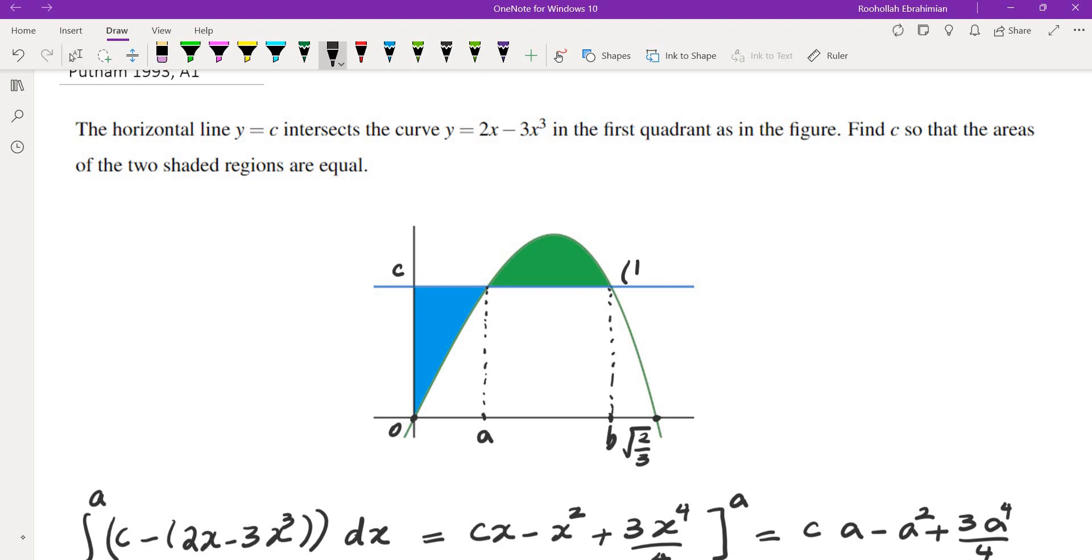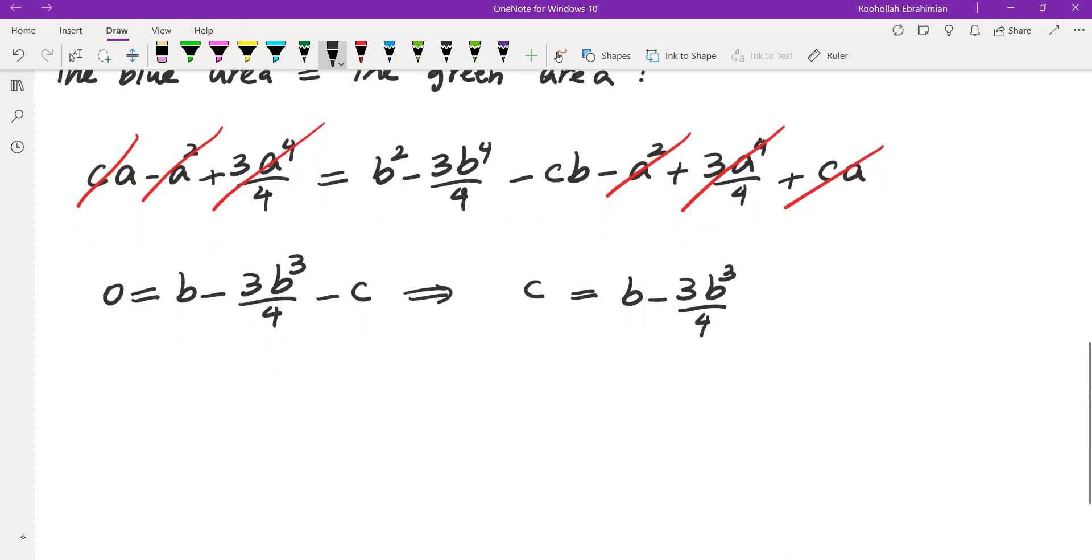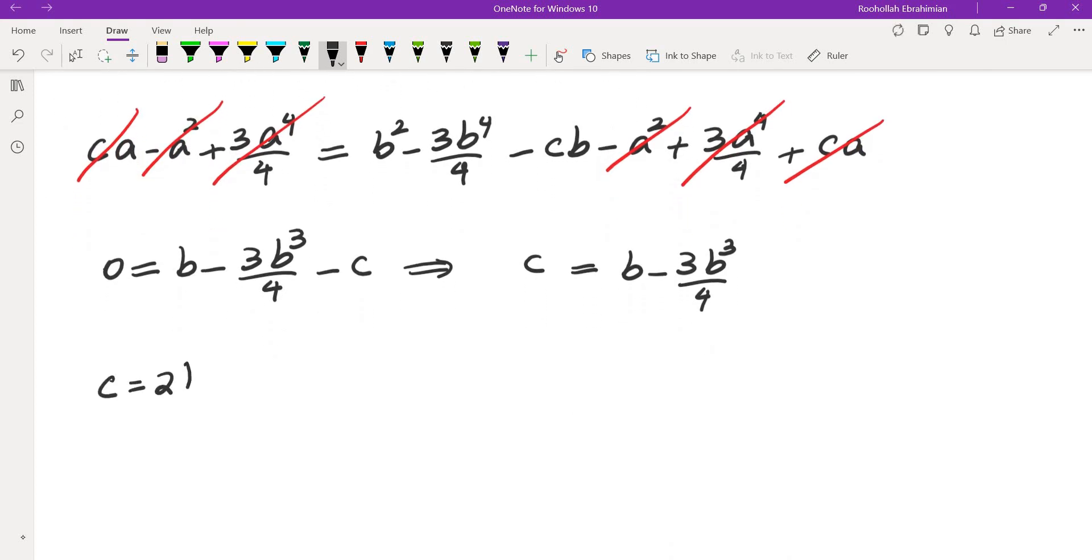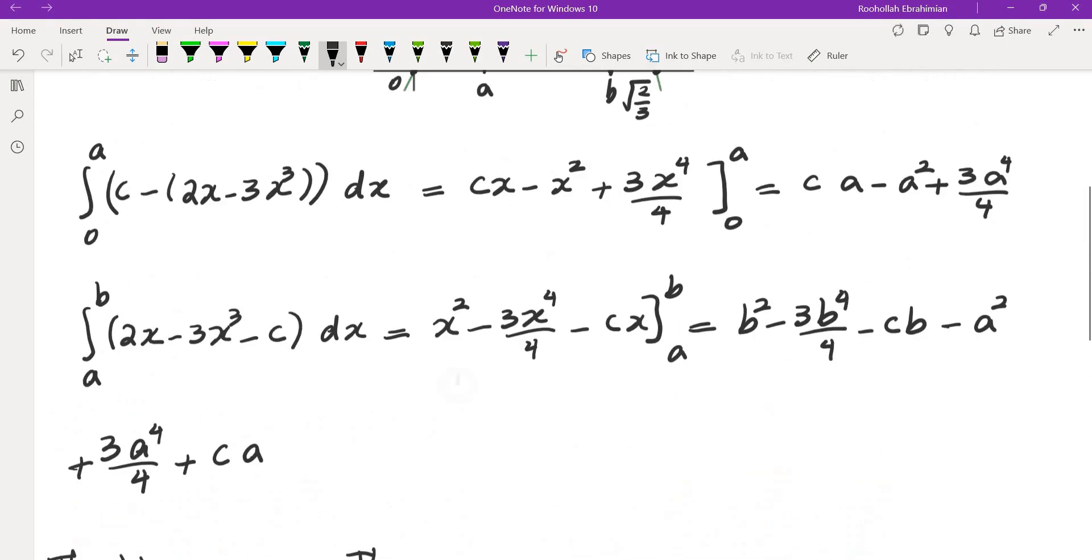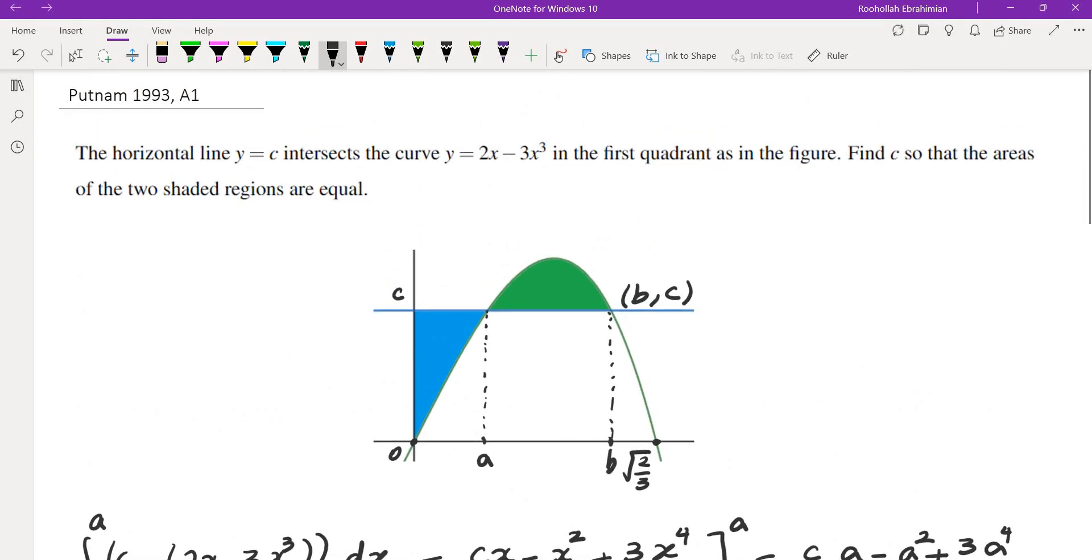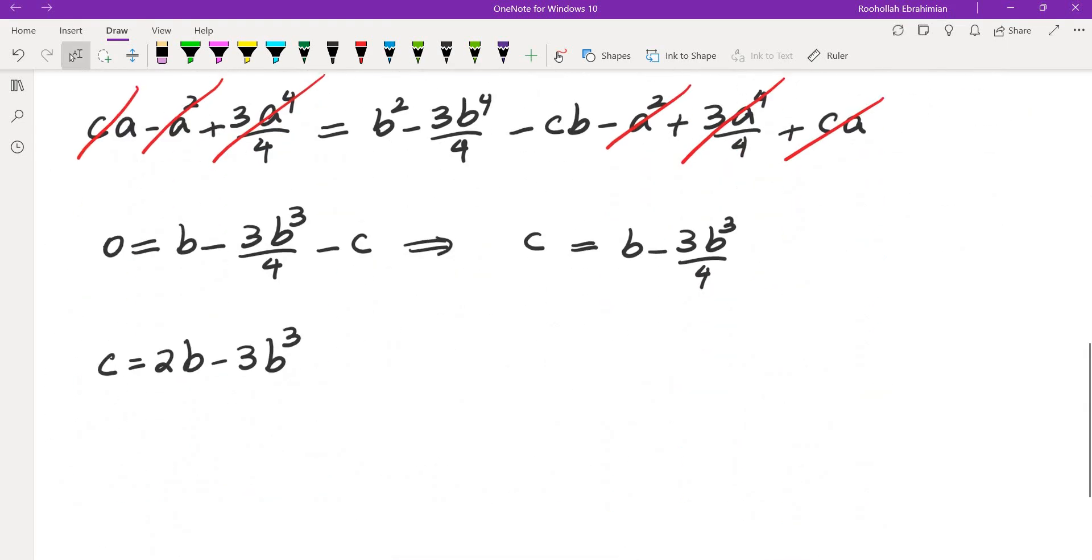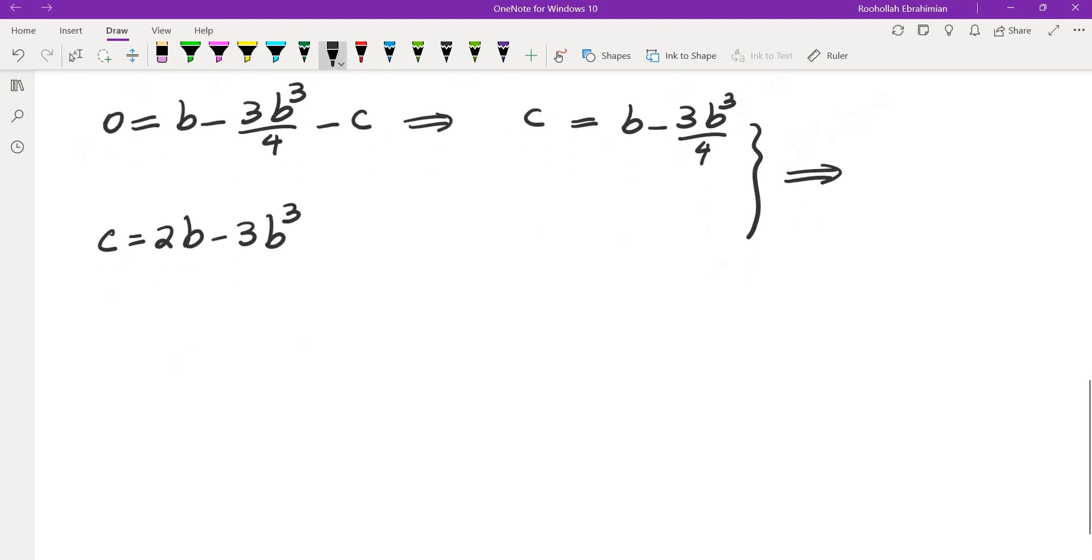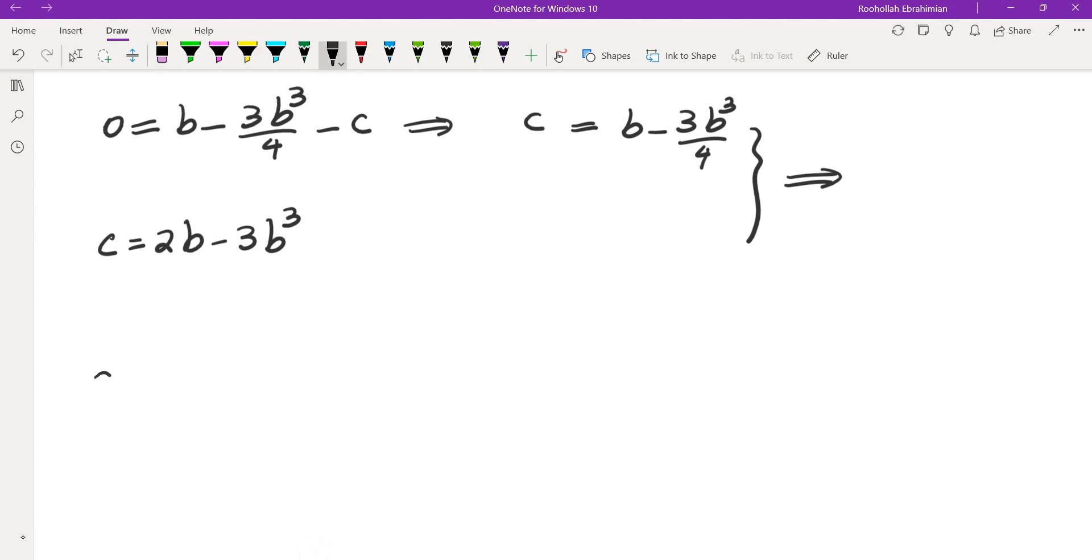b and c is on the curve, which means c is equal to 2b minus 3b cubed. So these two are also the same. Why? Because b is on the curve. Now we can solve this one for b.